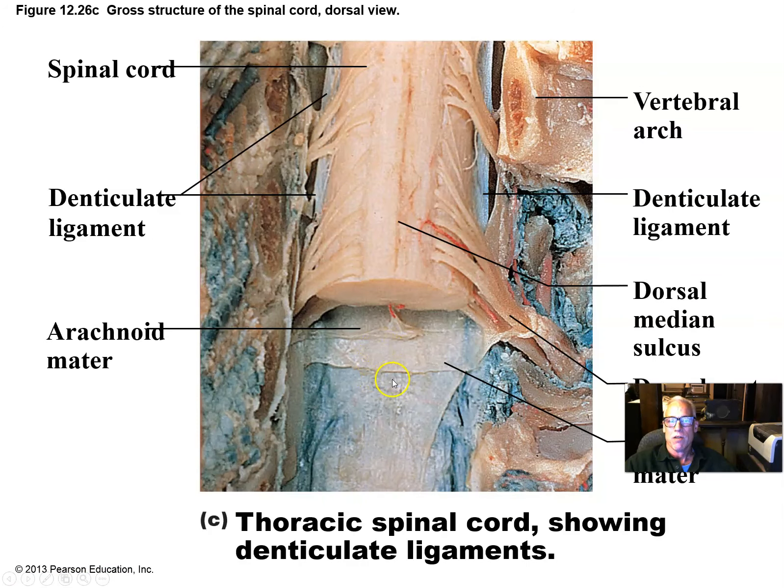This is another really nice dissection showing the conus medullaris, and then emerging from there — the end of the spinal cord — a whole bunch of additional nerves forming the cauda equina. Here's the filum terminale, that little bit of meninges that anchors the whole thing down.